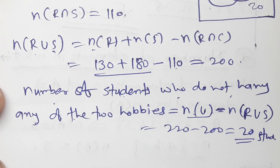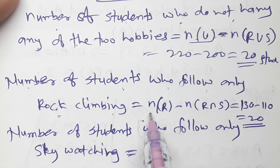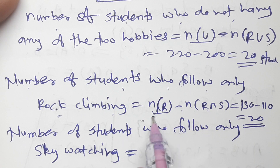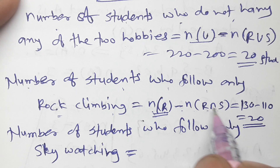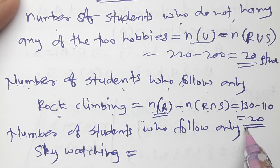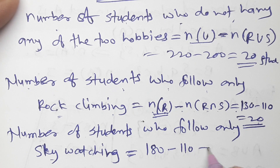Number of students who follow only rock climbing = number of R minus number of R intersection S = 130 minus 110 = 20. Number of students who follow only sky watching = number of S minus number of R intersection S = 180 minus 110 = 70 students.